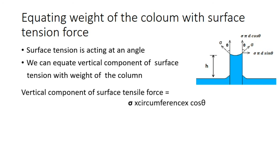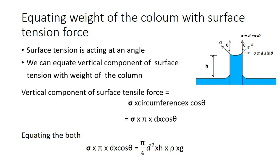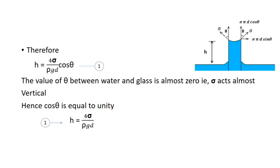Equating the surface tension force with the weight of the column: sigma × π × d × cos theta = (π/4) × d² × h × ρ × g. Rearranging, the capillary rise height is h = 4σ cos θ / (ρ × g × d). For water and glass, theta is almost zero since surface tension acts nearly vertical, so cos theta ≈ 1, and the equation simplifies to h = 4σ / (ρ × g × d).